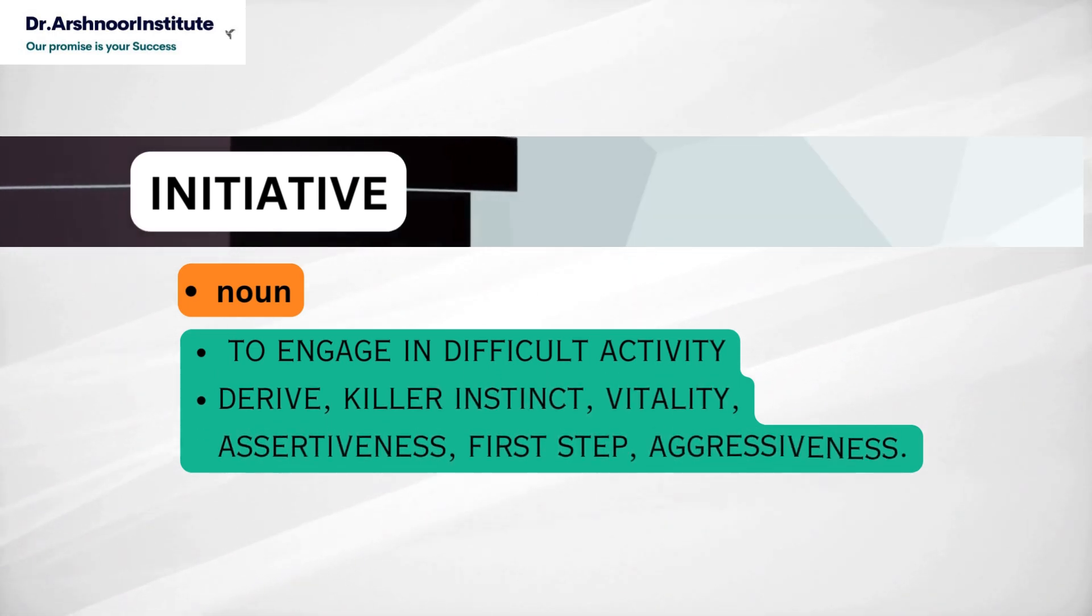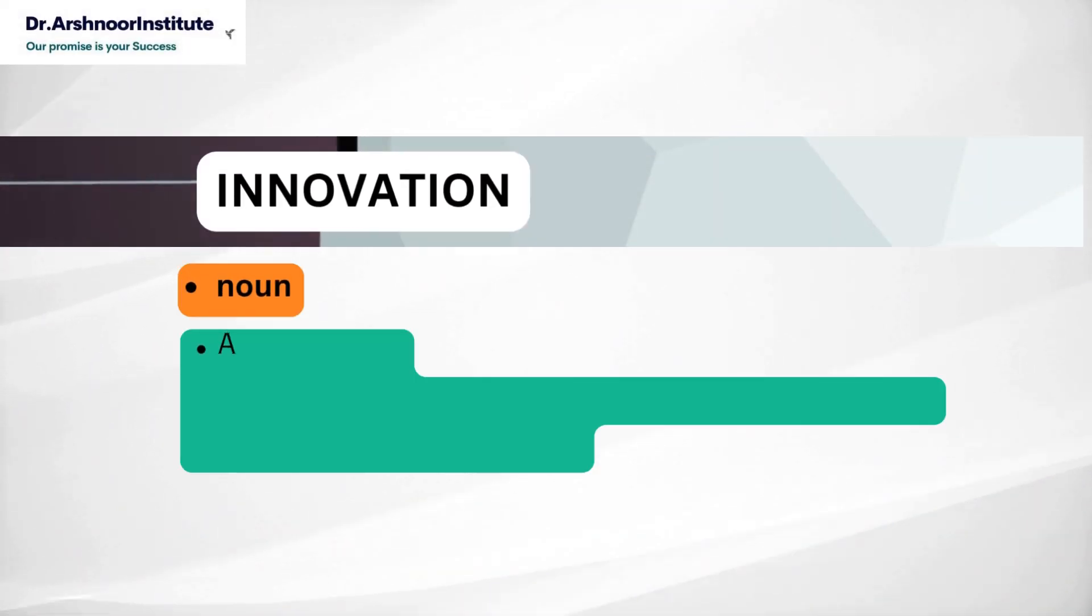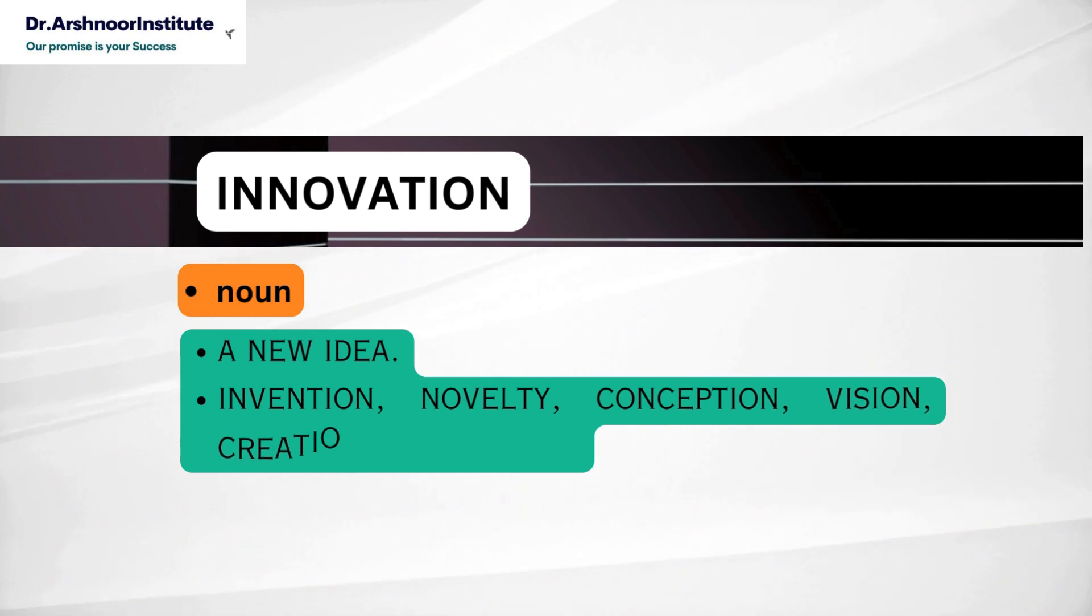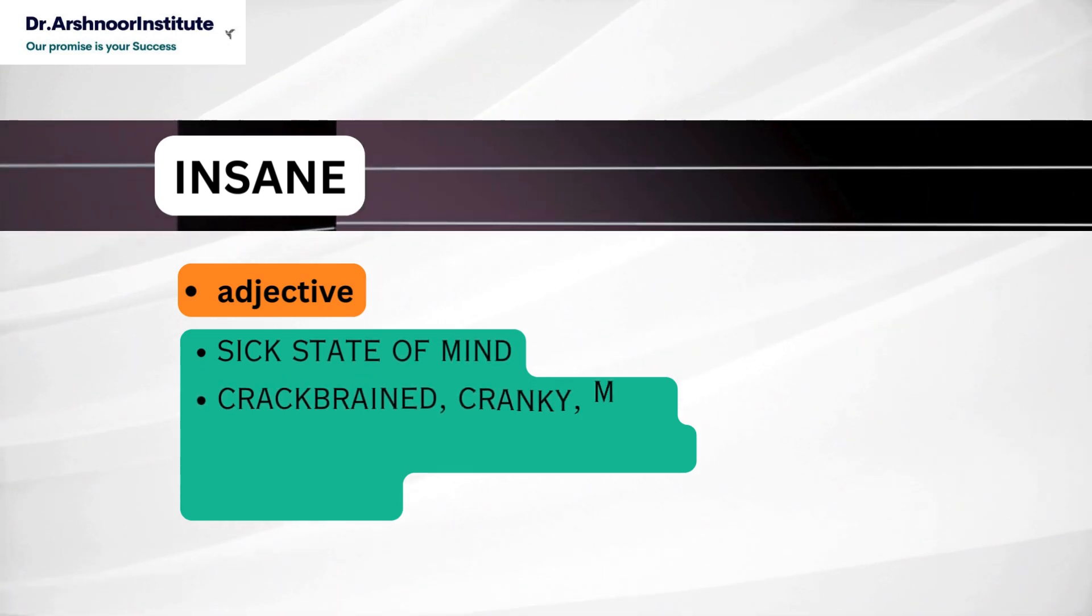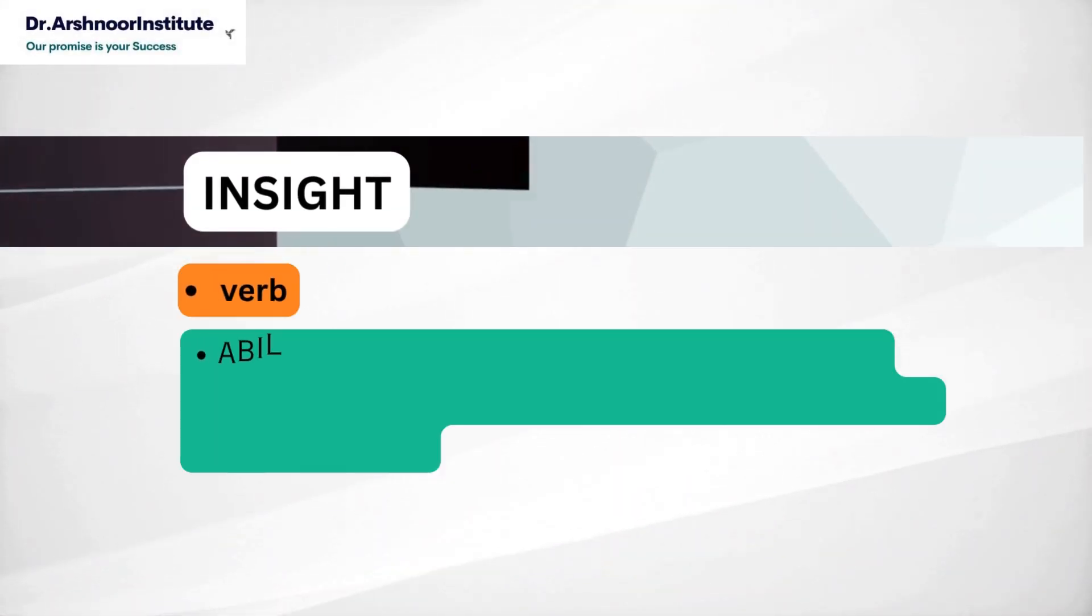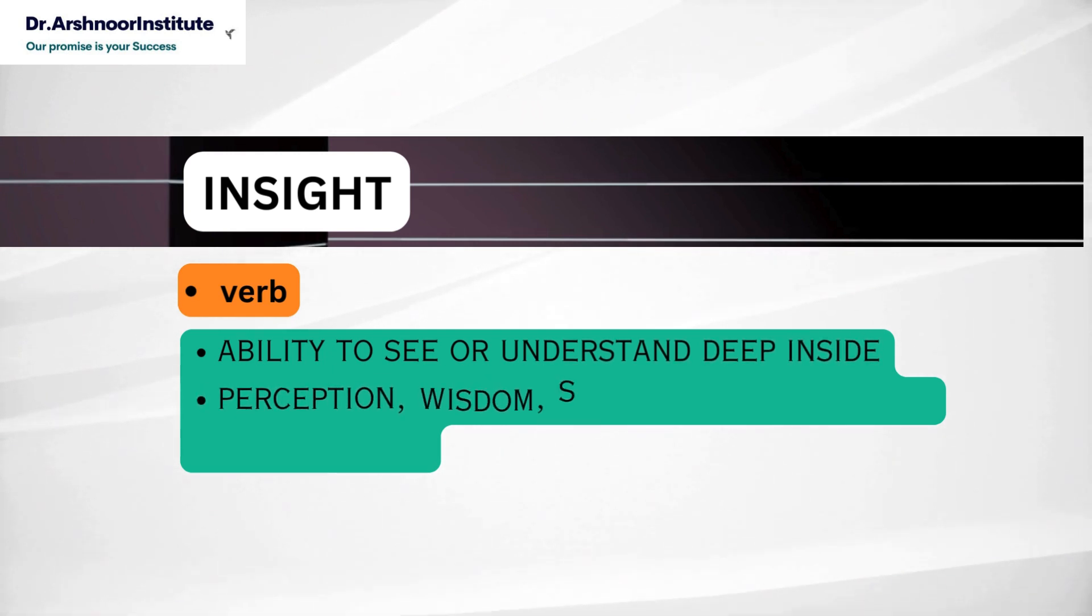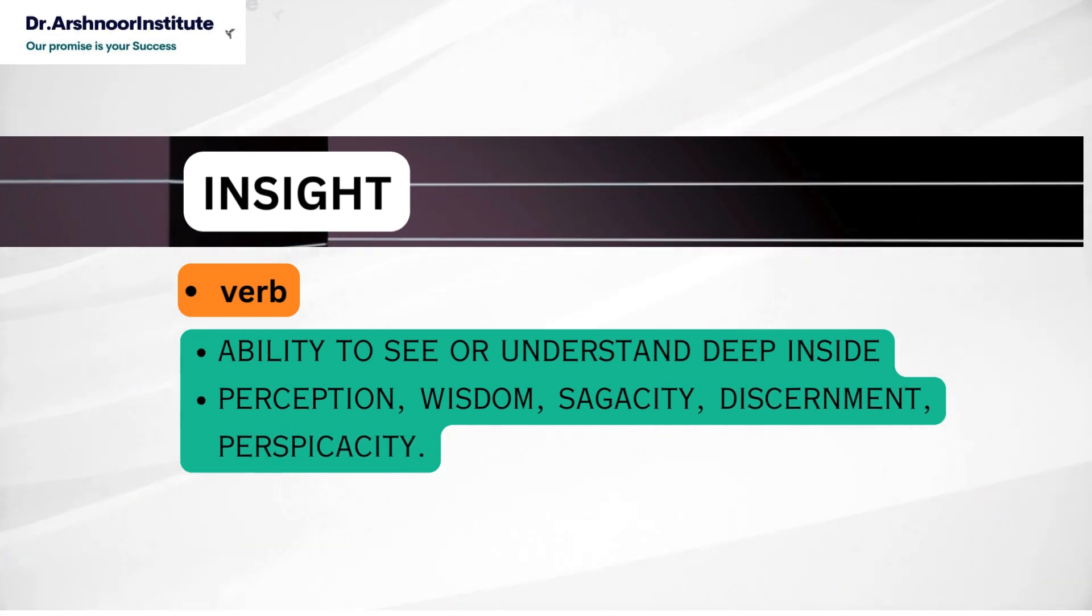Next word is innovation and this is a noun and this means a new idea and synonyms are invention, novelty, conception, vision, creation, concoction. Next word is insane. It's an adjective. It means sick state of mind. Synonyms are crack-brained, cranky, mad, maniacal, mental, delirious, eccentric. Next word is insight. This means ability to see or understand deep inside and its synonyms are perception, wisdom, sagacity, discernment, perspicacity. So we use the word perspicacious for the person who has deep insight.